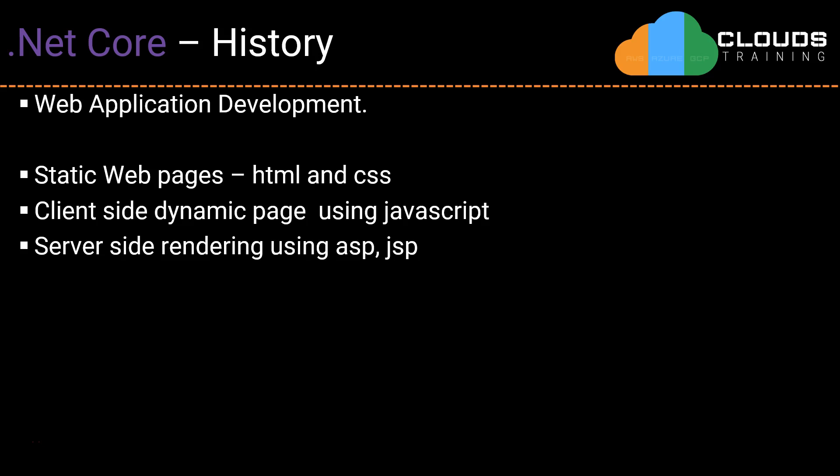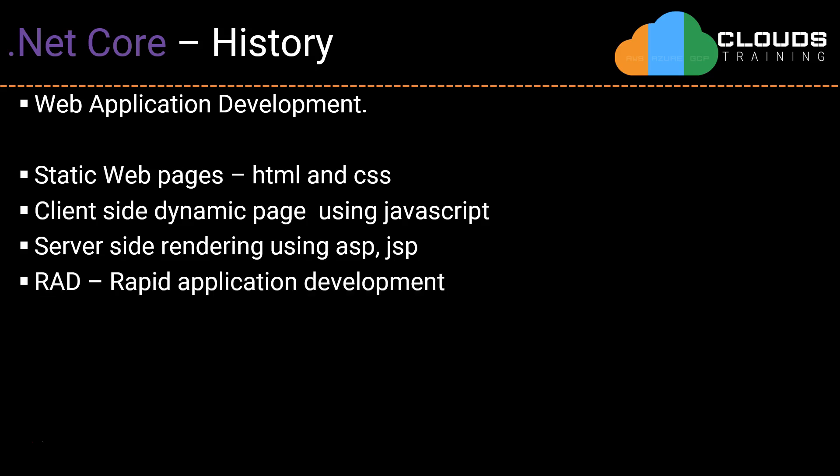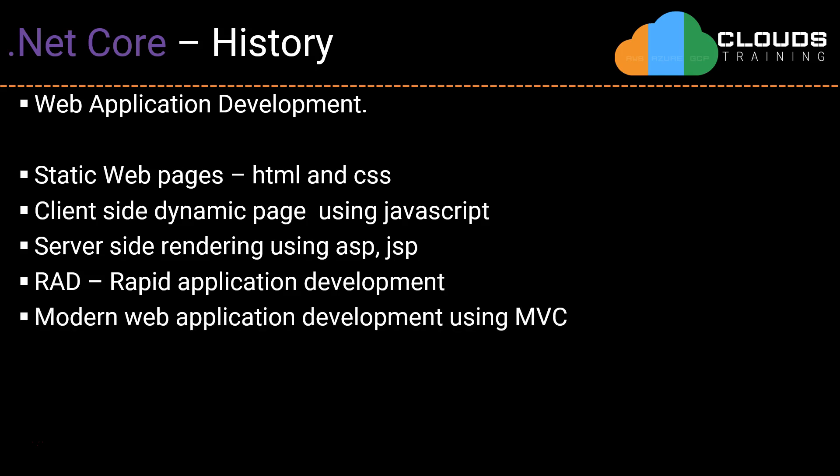Even though server-side rendering was extremely popular, it was really difficult to implement because systems were tightly integrated, and enhancing or modifying existing features was really tough. So the rapid application development model evolved, and the classic example is Microsoft .NET Framework web application development. Then we have modern web application development using MVC, which is what we are going to use in our .NET Core application development.